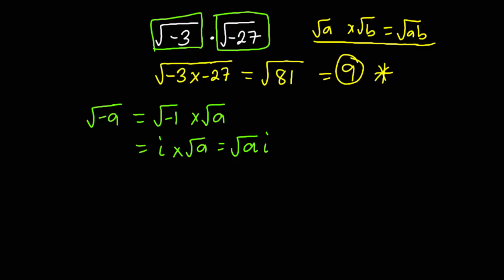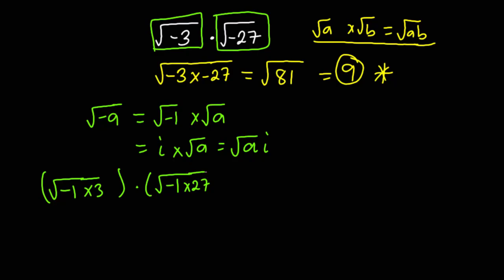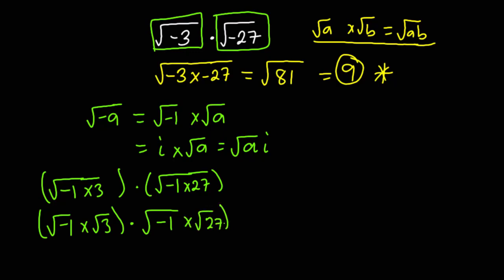So √(-3) = √(-1 × 3) = √(-1) × √3, and similarly √(-27) = √(-1) × √27. Now we can use the property of surds to expand: √(-1) × √3 × √(-1) × √27. Since √(-1) = i, this gives us i√3 × i√27.